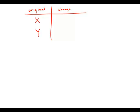Let's look at that for a second. If we want to increase by 10%, what we have to do is change this to a decimal — 0.1 — then add 1, so we get 1.1. Now what we've created is called a multiplier. And so if we multiply X by 1.1, that represents a 10% increase in X.